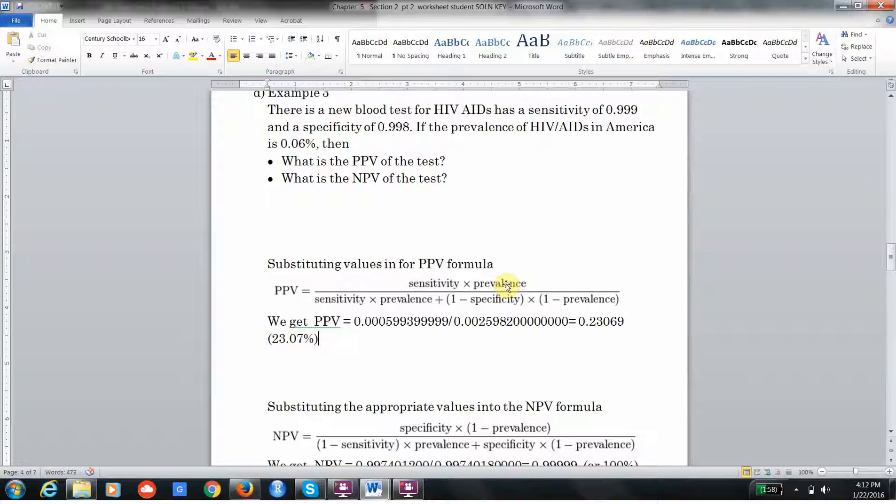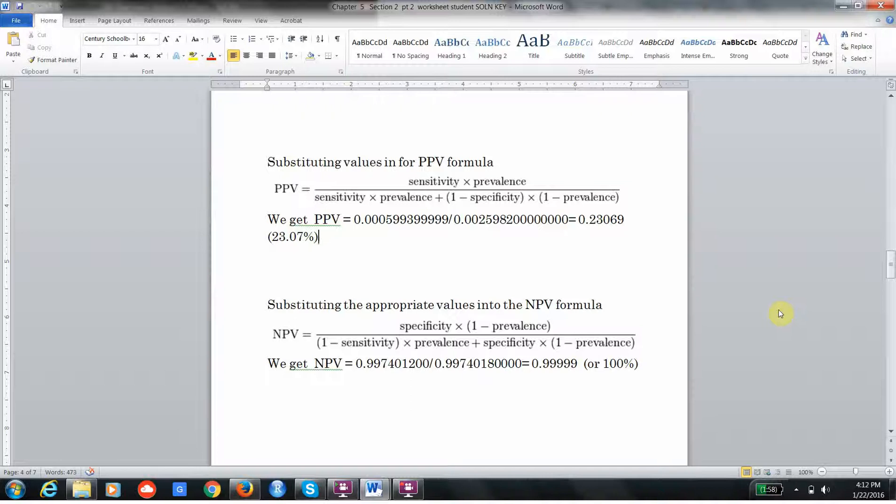This goes back to the fact that when the prevalence is very low, the PPV is also going to be low. Again, the NPV as you might imagine can only improve. It was 100% last example, it's going to be 100% this example when you do all the calculations.